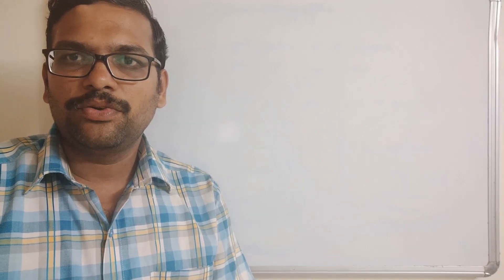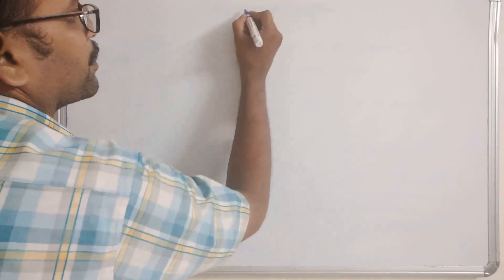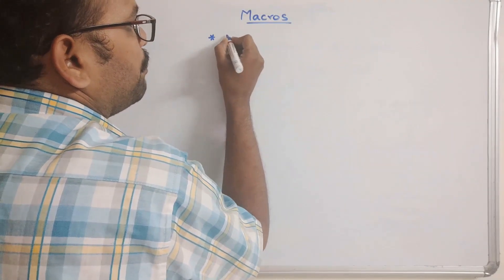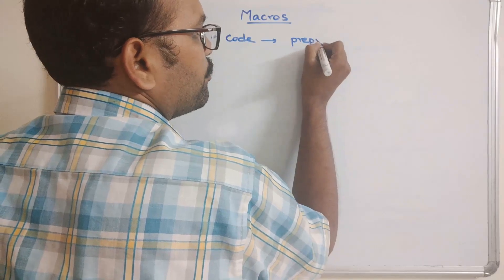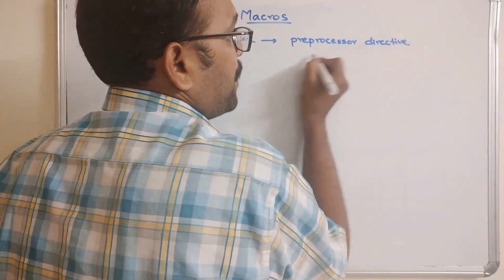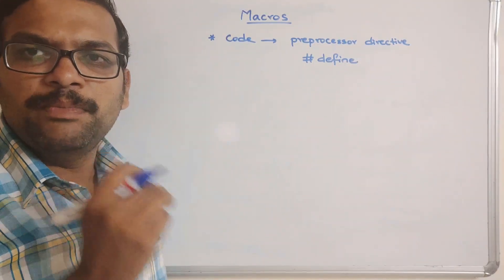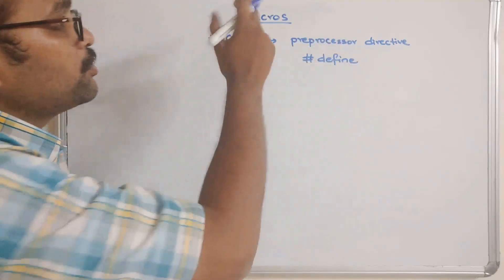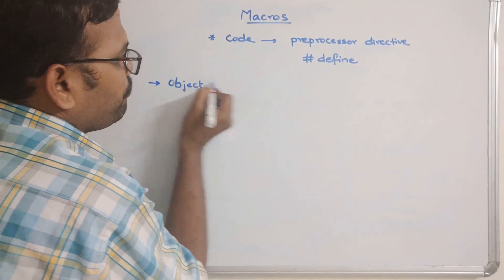Hello friends, welcome back to our channel. In today's session we'll discuss one more small topic in C programming — macros. Macros are a small piece of code implemented by using a preprocessor directive: #define. Macros are divided into three categories: object-like macros, chain macros, and function-like macros.